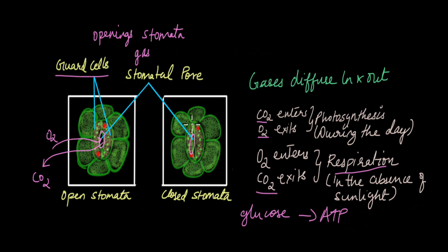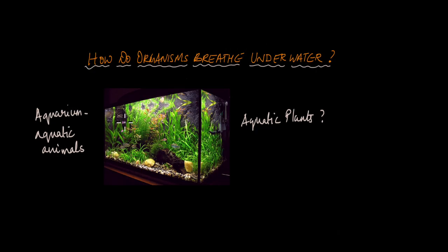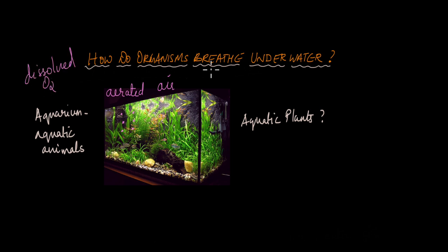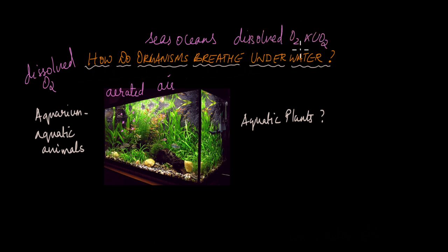Why do the guard cells need to control the opening of the pores? Why do the pores need to be closed at times? Next, we'll move on to underwater organisms. Where do underwater organisms get their oxygen? If you've seen an aquarium, you might have noticed tiny bubbles in the water, showing that the water is being aerated or pumped with air. In the vast seas and oceans, the water itself has dissolved oxygen and carbon dioxide, which underwater organisms use to perform cellular respiration.